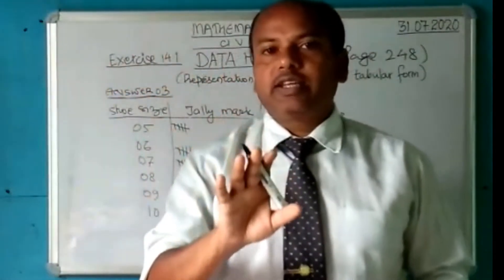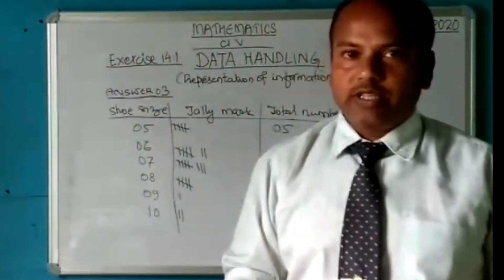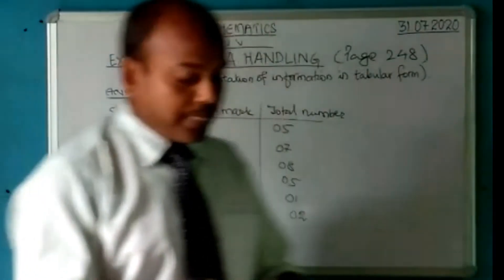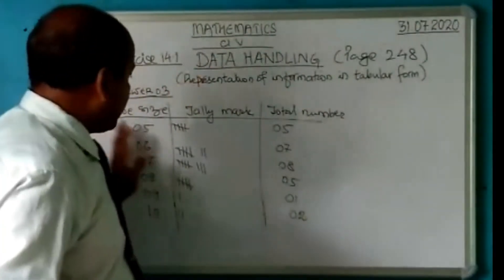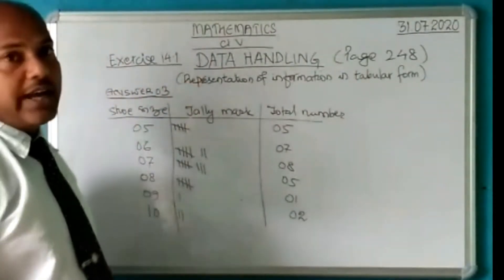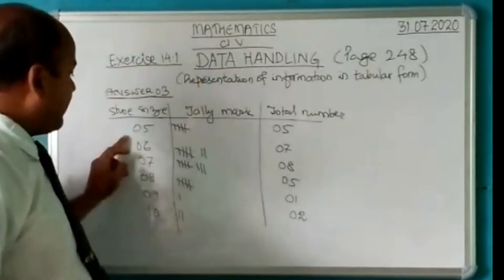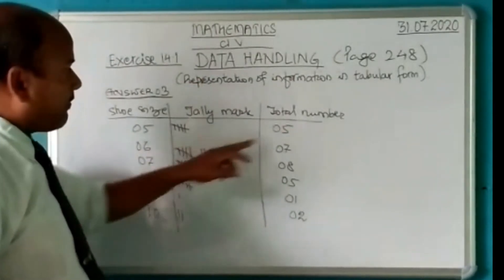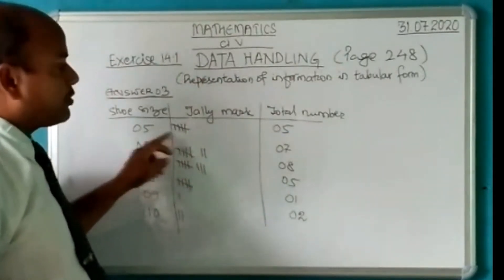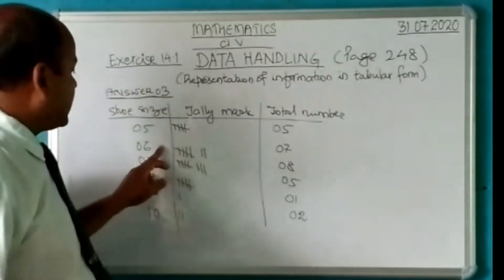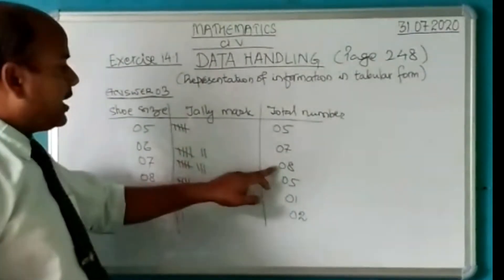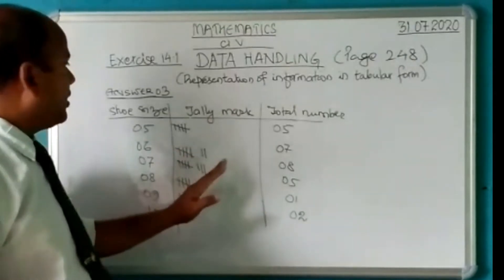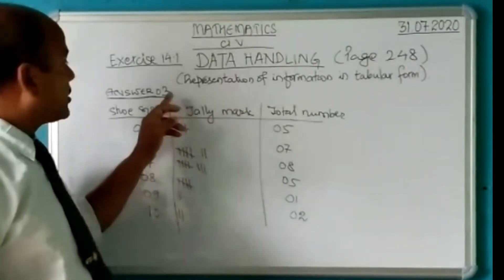There are 28 students and each student has a different size of shoe. We have tabulated the data and found that the smallest size is five and the highest is ten. Five students wear size five, seven students wear size six, eight students wear size seven, and so on, and so forth. This is the tabulation for question number three.